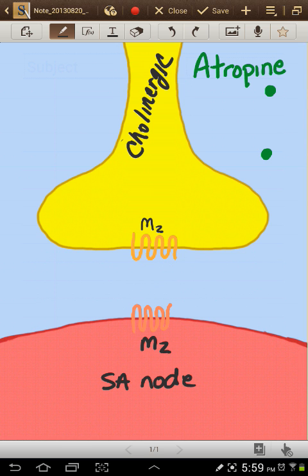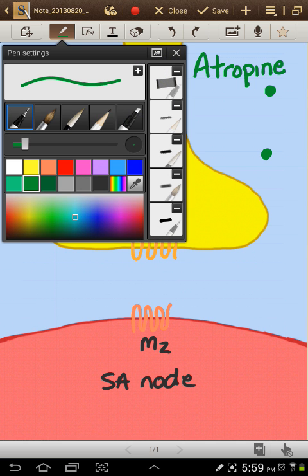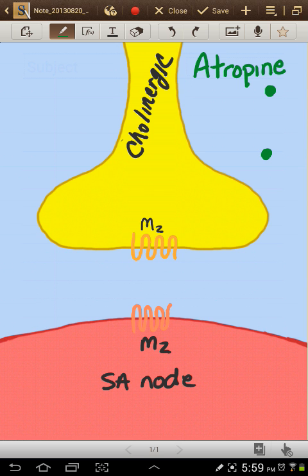Now, when we give a drug in low dose, typically it will bind presynaptically. So let's look at our atropine. We give it in the low dose, and it comes down. And typically low dose will bind presynaptically.